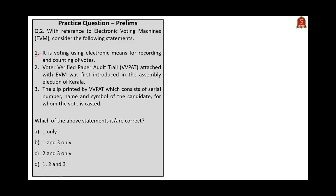The second question: with reference to electronic voting machines, consider the following statements — first, it is voting using electronic means for recording and counting of votes; second, VVPAT attached with EVM was first introduced in the Assembly election of Kerala; third, the slip printed by VVPAT consists of serial number, name and symbol of the candidate for whom the vote was cast. The correct statements are one and three. Statement two is incorrect because VVPAT was not first introduced in the assembly election of Kerala — it was first introduced in the assembly election of Nagaland. Hence the correct option is one and three, which is option B.